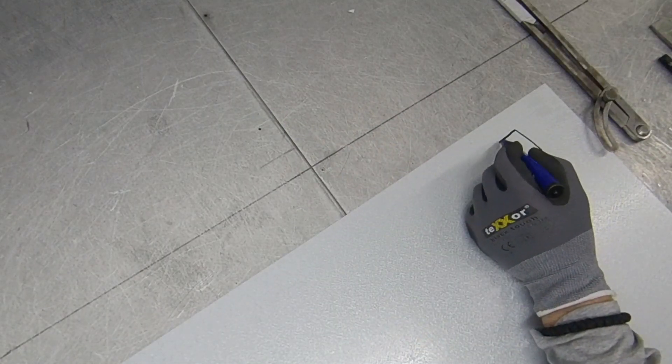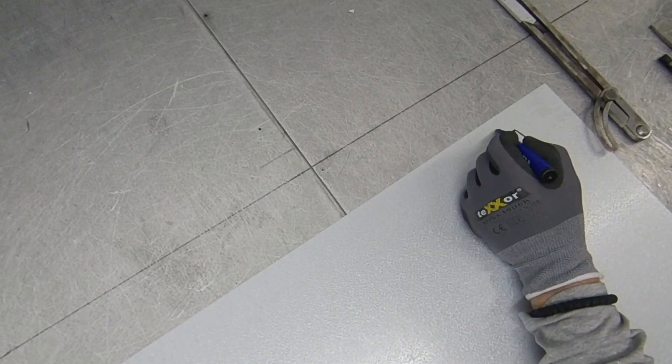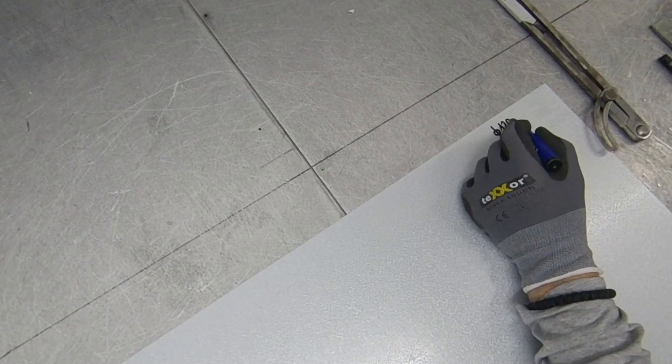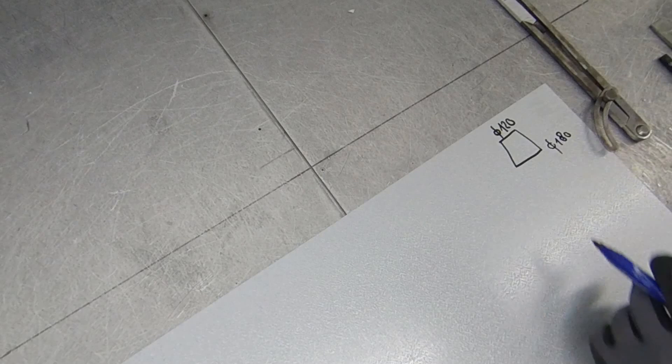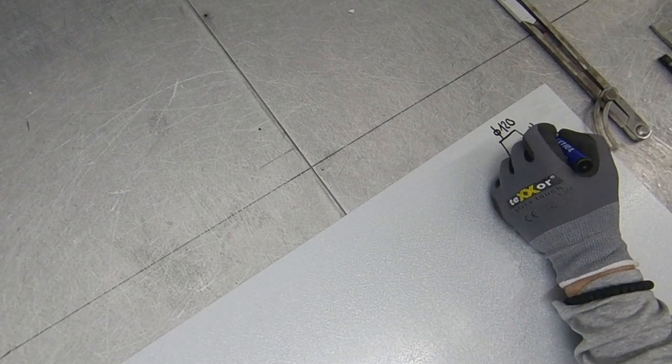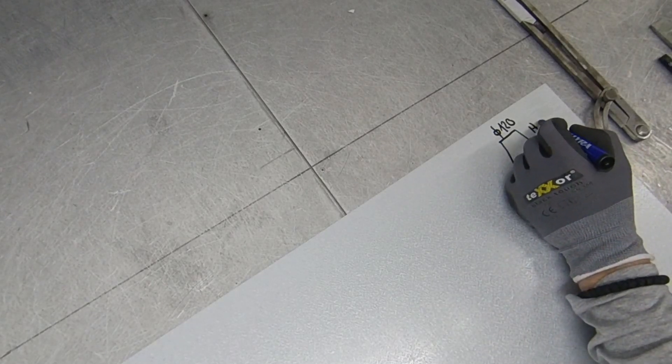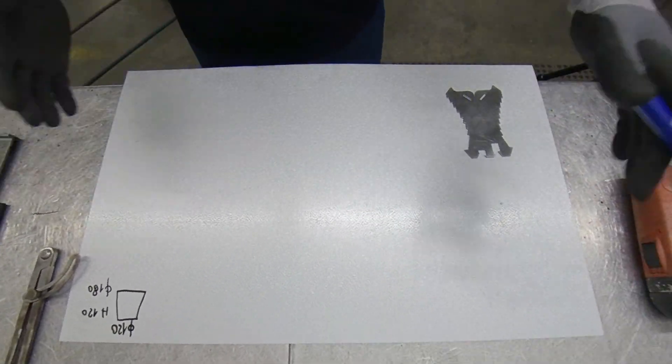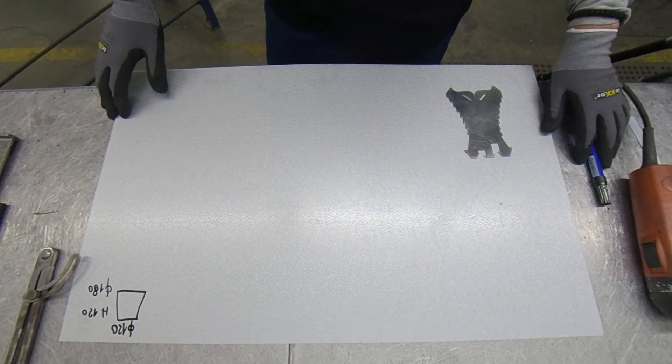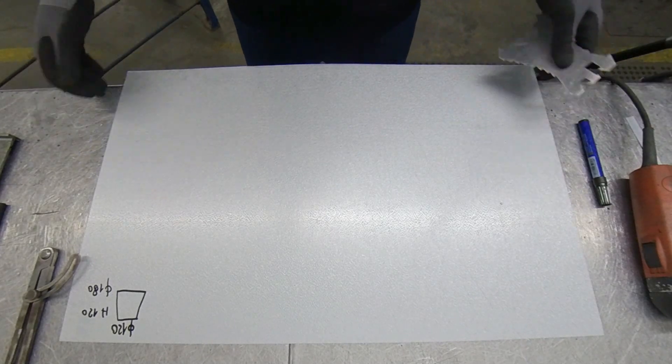I'm going to write here the information about what kind we're going to make. We're making a small one with a diameter of 120, the big one has a diameter of 180, and it's 120 high. I took those sizes so it won't be too small or too big, so I can use it on this metal.